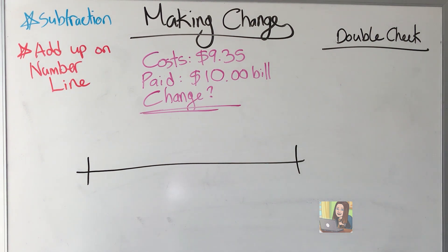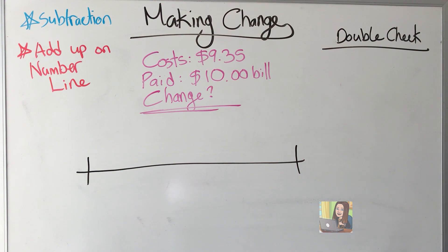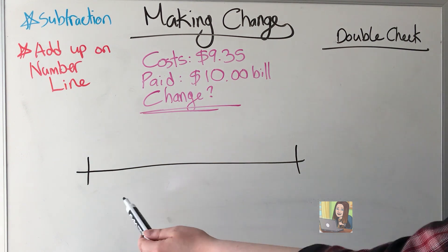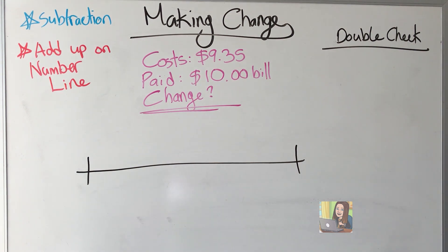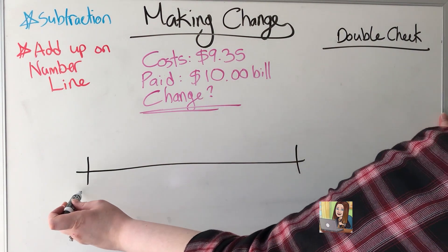We're going to look at two examples. The first one: an item you want to buy costs nine dollars and 35 cents, and you paid with a ten dollar bill. We want to know what our change is. There are two ways we're going to do this — I love a number line, so that's one way, and that's the approach a lot of adults use in their head in a store. The second way we're going to use subtraction and stacking to double-check our work.